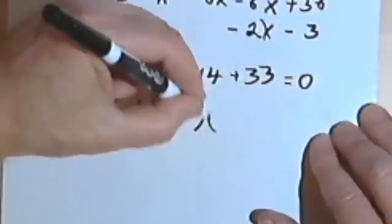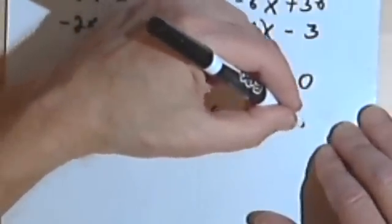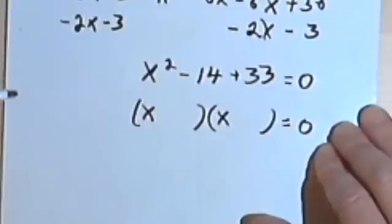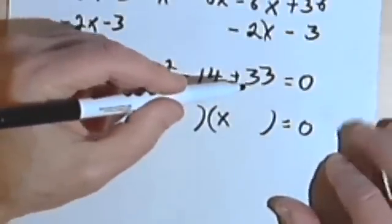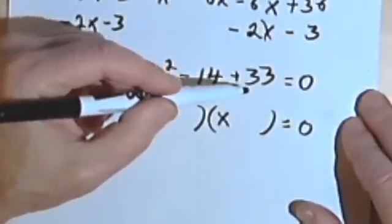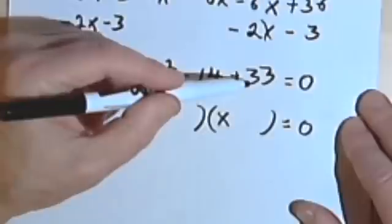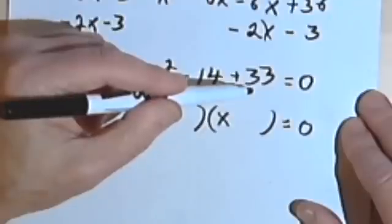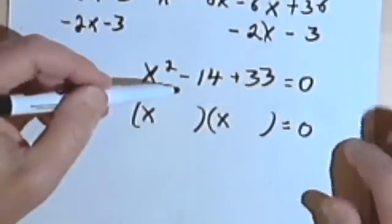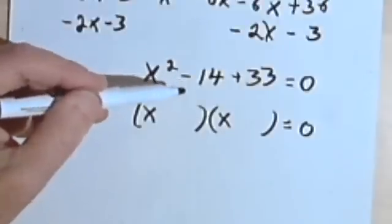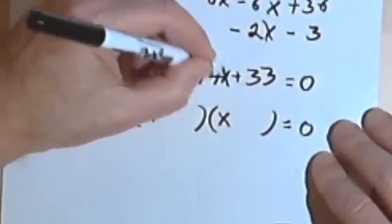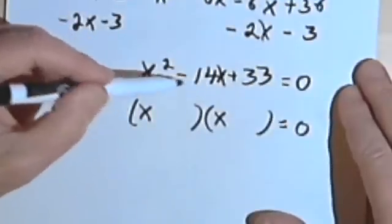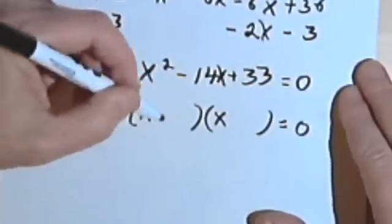If I factor it, I know both of my binomials are going to start with x. I want to figure out how I got that positive 33. Well, the positive 33 came from multiplying two numbers. And they both had the same sign, because it's positive 33. And then I can see they both had a negative sign, because the middle term, the negative 14x, is negative. So I want two minus signs here.